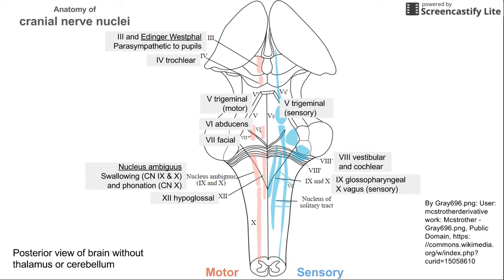Hypoglossal is a little more medial to nucleus ambiguus. Hypoglossal, of course, is innervation of the tongue, so neurons that fire out to the tongue would synapse in this shaded region. Lastly is nucleus solitarius, which governs taste, chemoreceptors, and baroreceptors, using cranial nerves seven, nine, and ten. Cranial nerve nine provides chemo- and baroreceptors for the carotid body, while cranial nerve ten provides them for the aortic arch. The anterior two-thirds of the tongue is innervated by cranial nerve seven, the posterior one-third by cranial nerve nine, and the epiglottis for taste by cranial nerve ten — all synapsing in the nucleus solitarius.